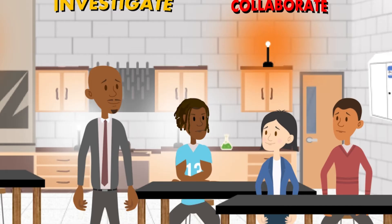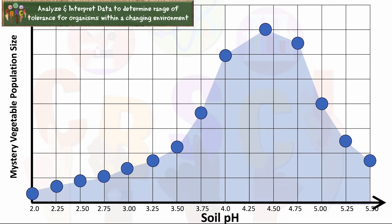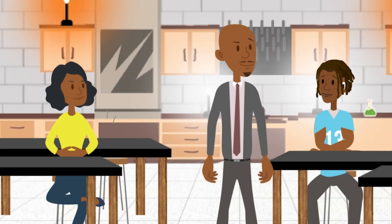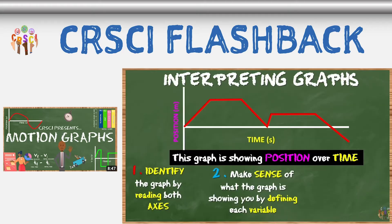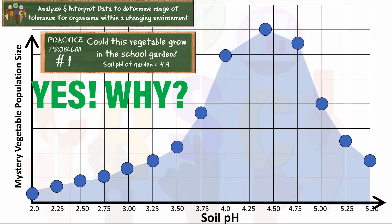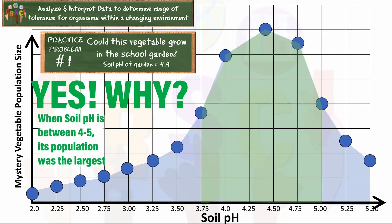Well, I wouldn't say nothing. Gerardo, what was the pH of the soil? About 4.4. Look at this data here — could this unknown vegetable shown in this graph grow in your garden? I don't even know what we're looking at. Well, I know how to interpret any graph. It's showing you the number of plants as the pH of the soil increases. Then yeah, it could grow in our garden, because when the pH is between 4 and 5, it had the highest number of plants.